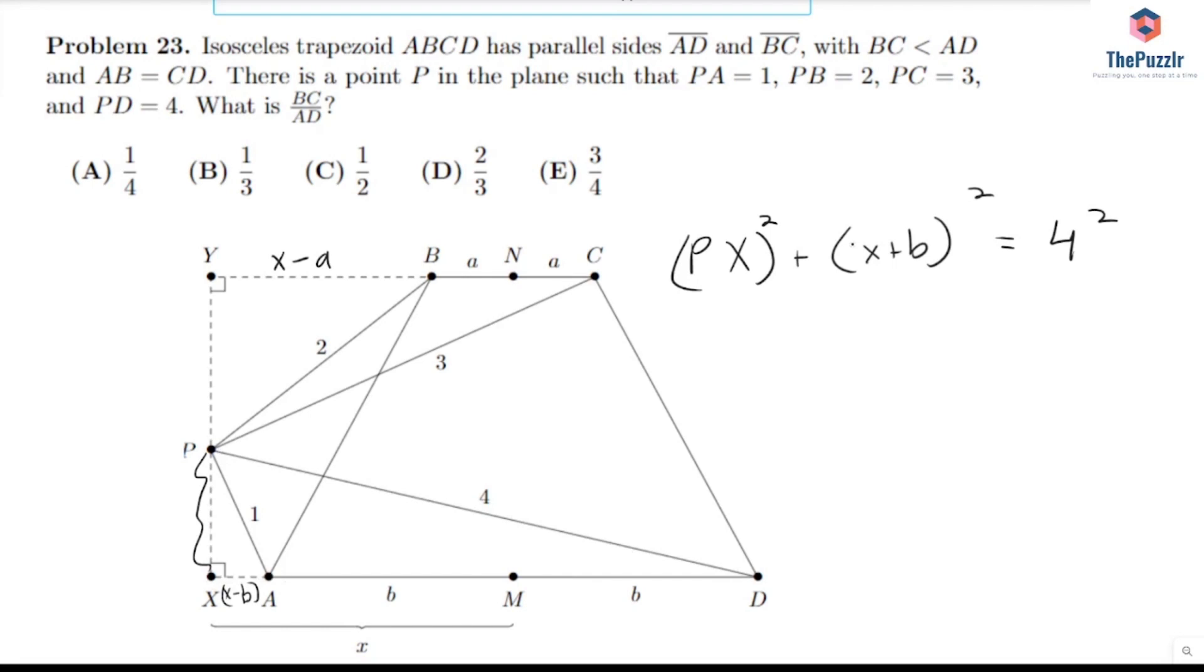And now we also have this tiny triangle right here. That's also a right triangle. So PX squared plus X minus B squared equals 1 squared. Now I can subtract these two equations from each other. So X plus B squared minus X minus B squared gives me 4 squared minus 1 squared. So 16 minus 1, so 15.